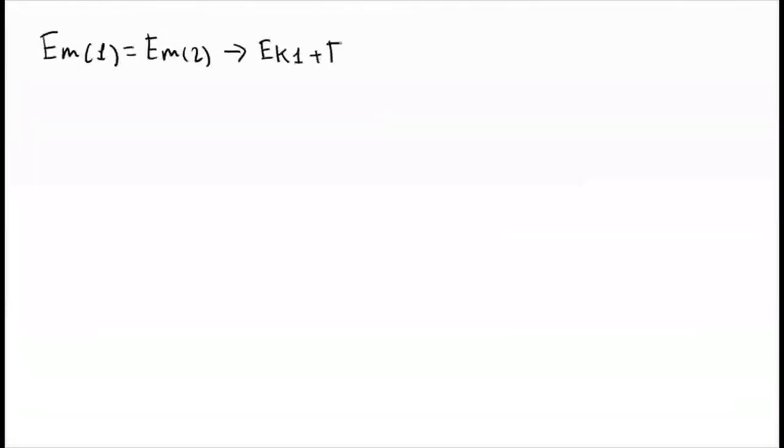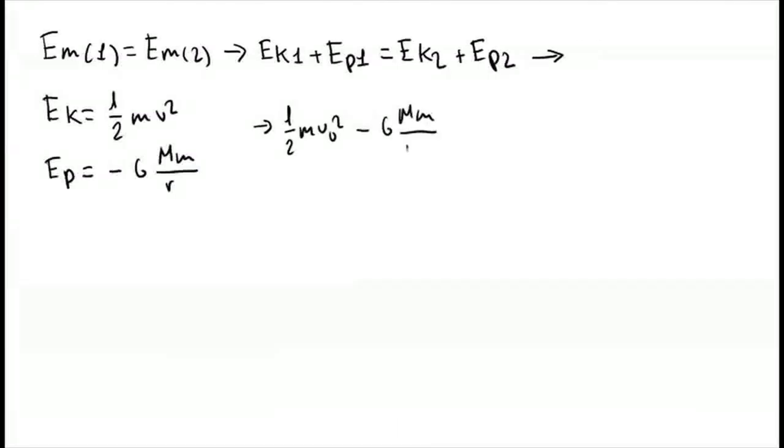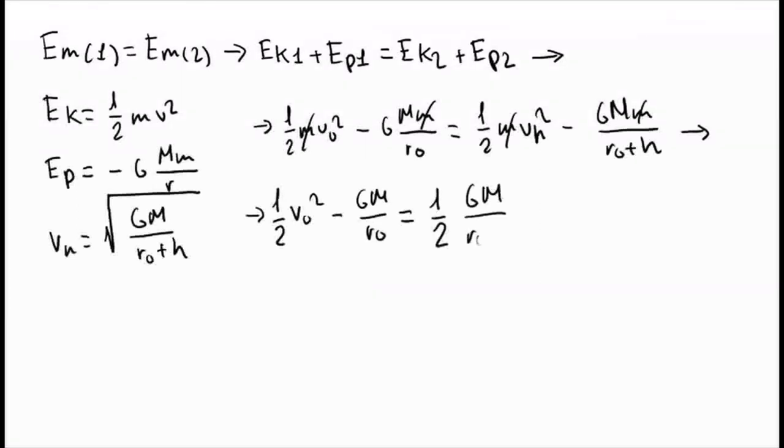Now, let's calculate the speed that we need to put the object into an orbit 1000 km over Earth's surface. If we consider that the gravitational field is conservative, we can use this equality to calculate the speed.